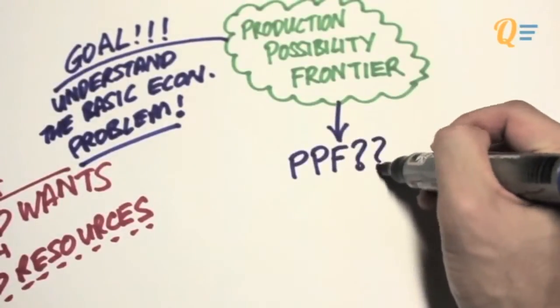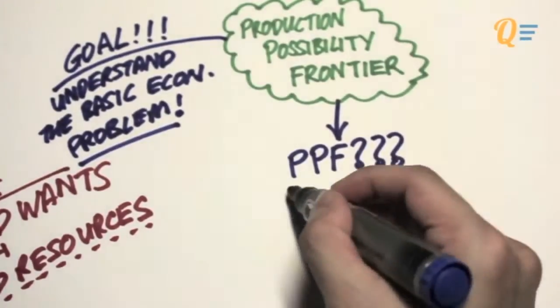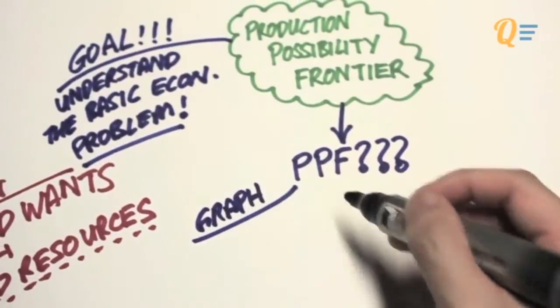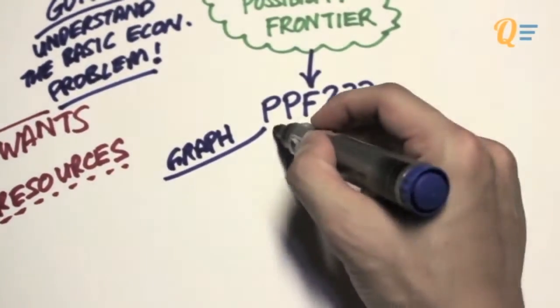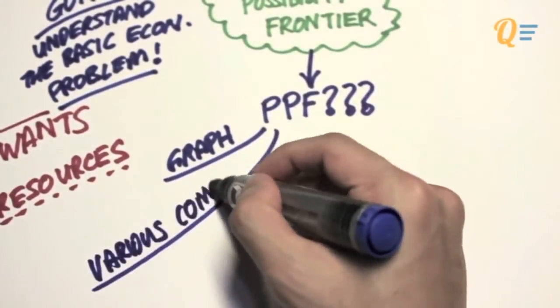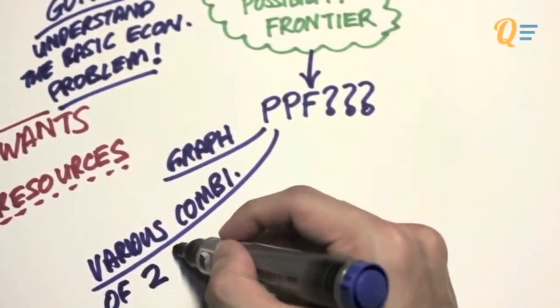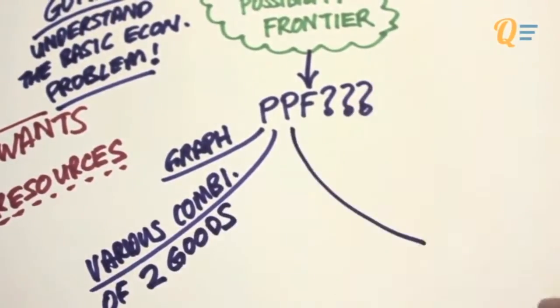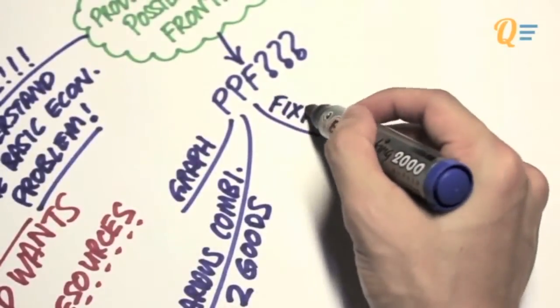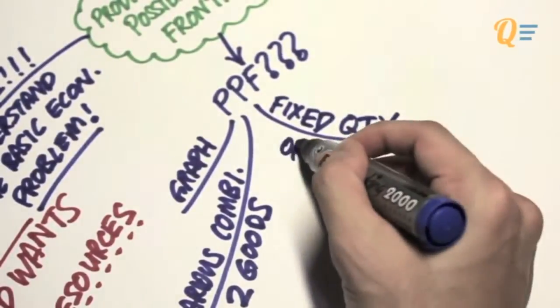We are going to analyze this problem using the PPF. So what is the PPF? Well, the PPF is simply a graph that illustrates various combinations of two goods that we can produce with a fixed amount of resources.